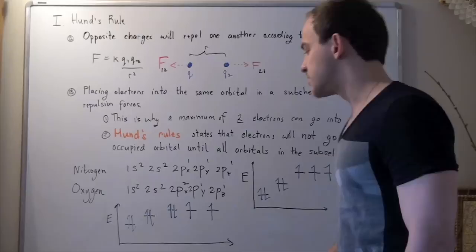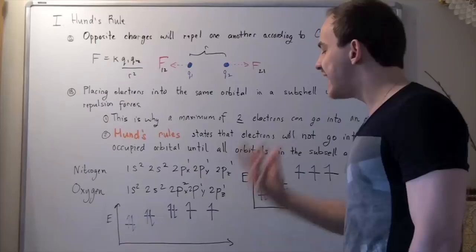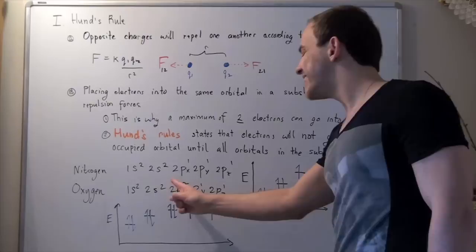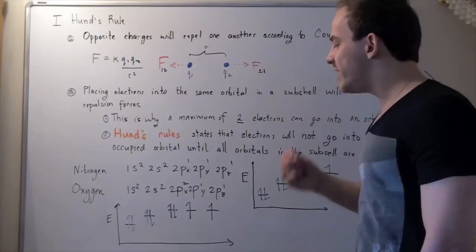So, up, down, up, down, up, up, up. And then, I take my fourth electron, and final electron, and put it into my 2px. So, I draw a down one.